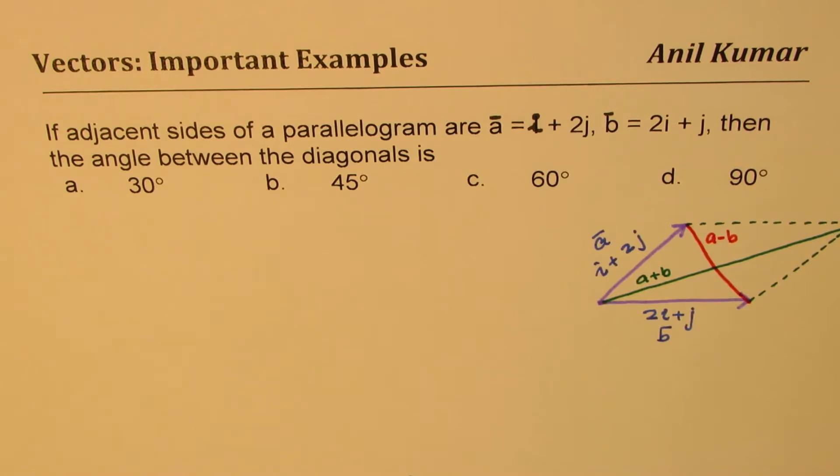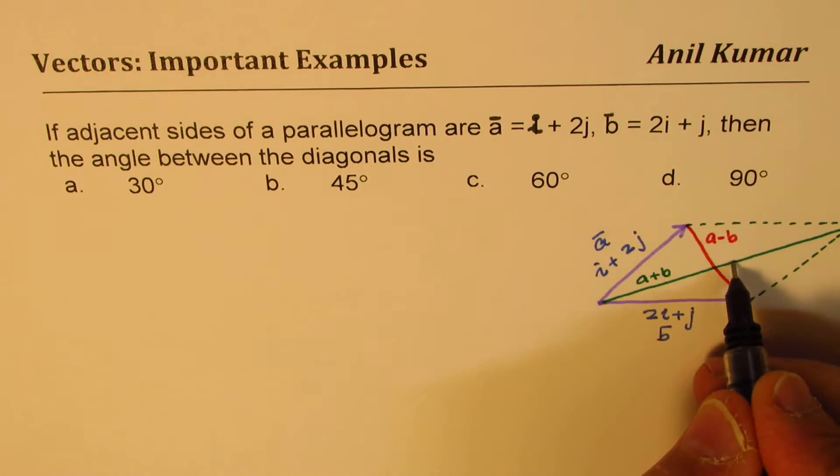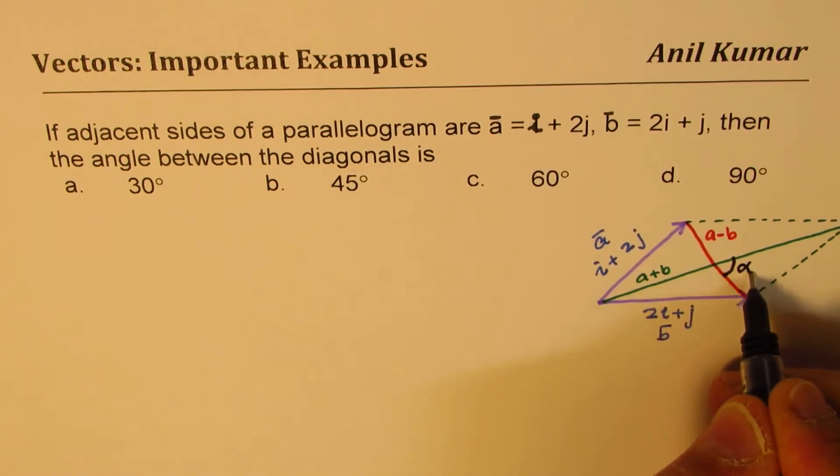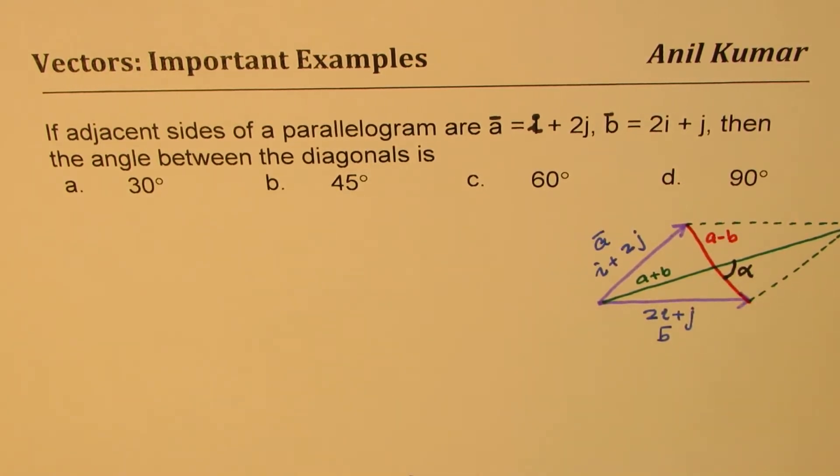The other will be a - b, so let's just join it. When we say we want to find the angle between the diagonals, that means we are looking for this angle, so let's call this angle as alpha. So we need to find that angle.